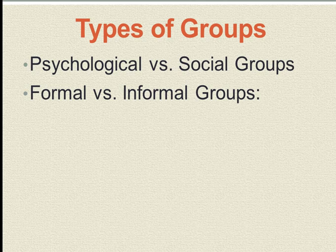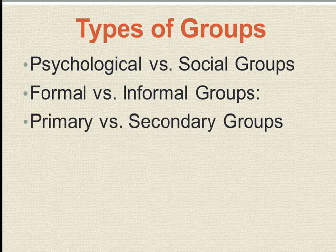Then primary versus secondary groups. Primary group wo hota hai jo aapka small size mein hota hai, jismein aapki jo interaction hai — jo unke saath milna-julna hai, mulaqaat hai — wo face to face hoti hai. Ghar mein mil sakte hain, office mein milte hain. That is basically your family groups and your neighborhood groups.